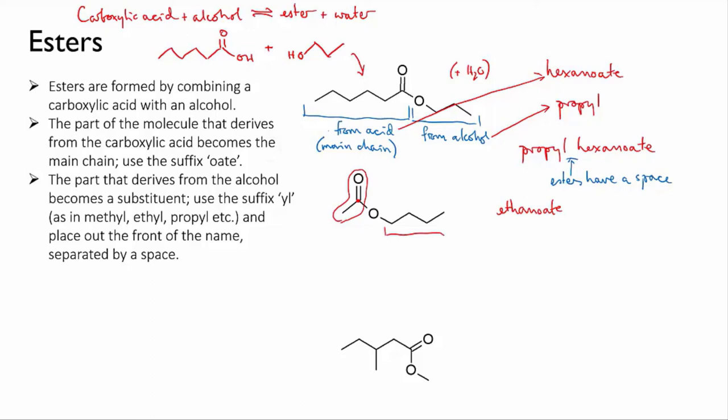Then the substituent part has four carbons, so it's butyl. And together, that makes butyl ethanoate.